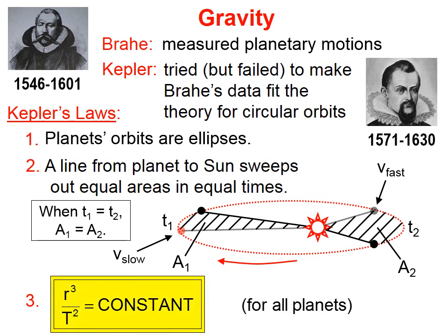Kepler's Third Law is an equation that says r cubed over t squared is a constant, which means that the average distance between the sun and the planet, cubed, divided by the time it takes the planet to go around the sun, squared, is some constant number. And it doesn't matter for which planet you put data into that equation — you'll always get the same answer.